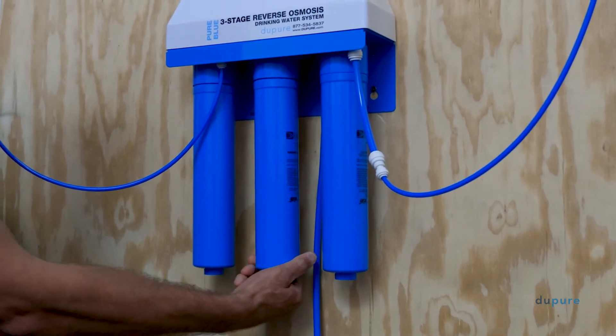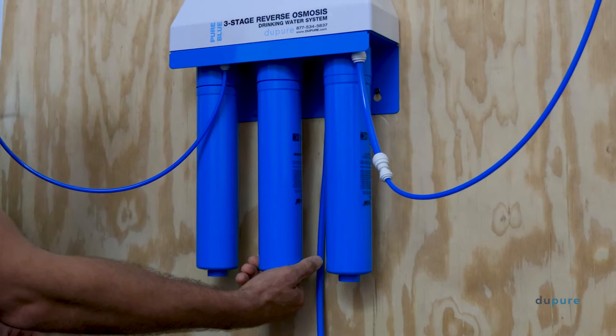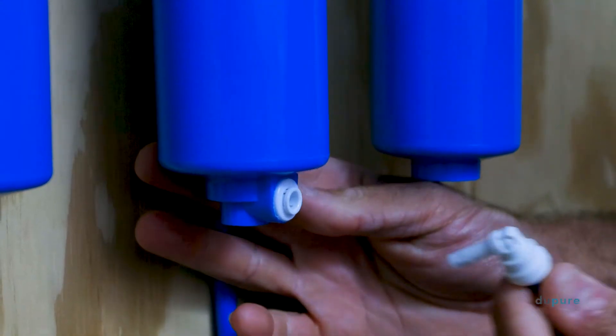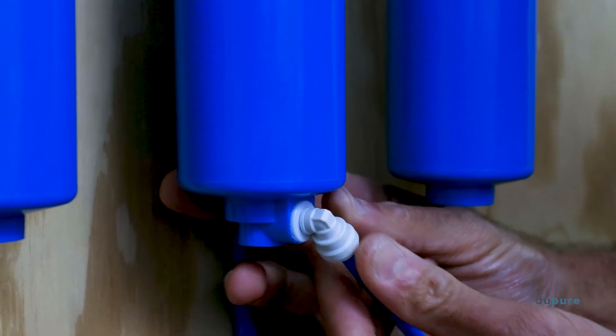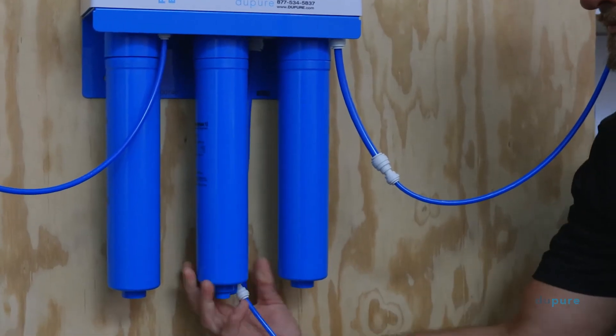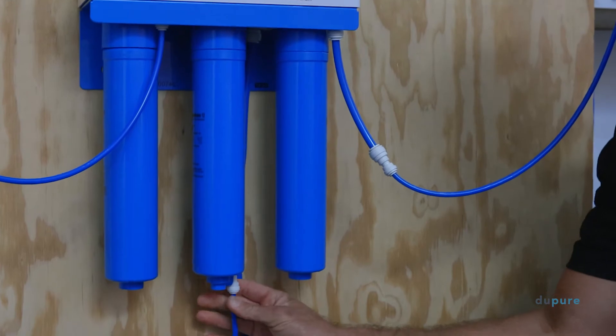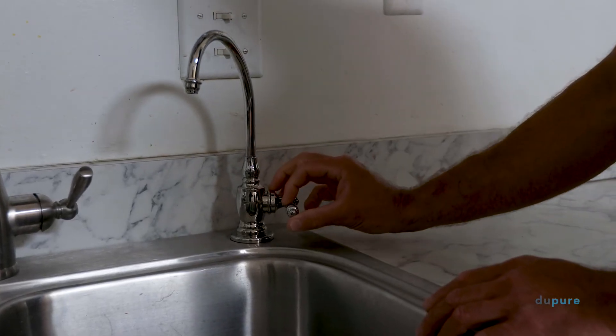Then, unscrew a half turn and insert the drain line. Tighten again counterclockwise until it is hand tight. Now, you can open the spigot.